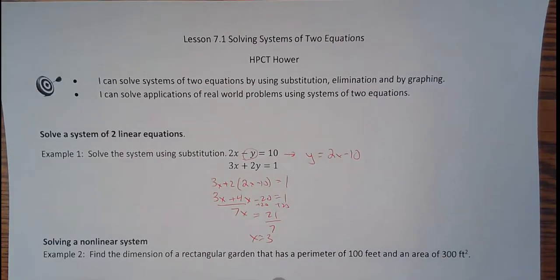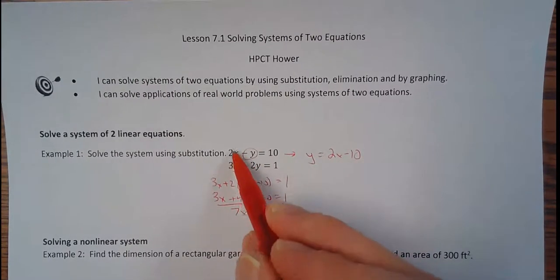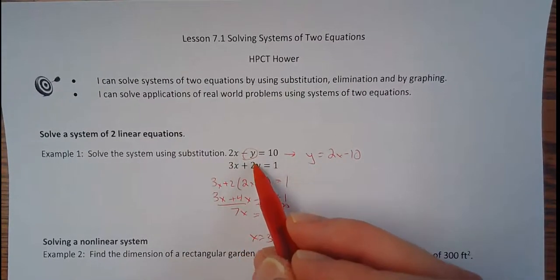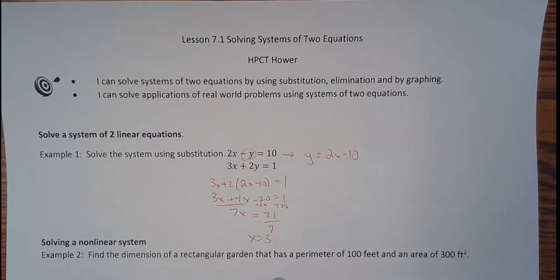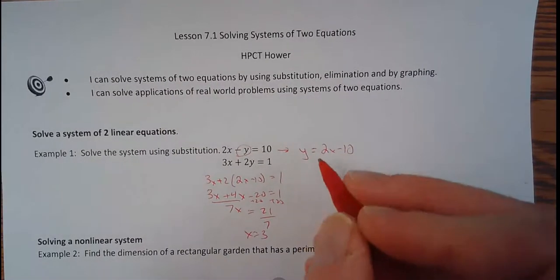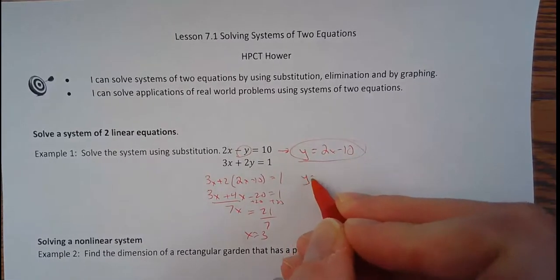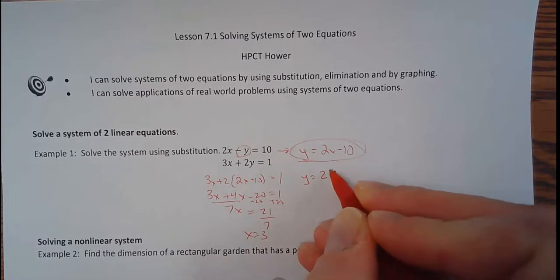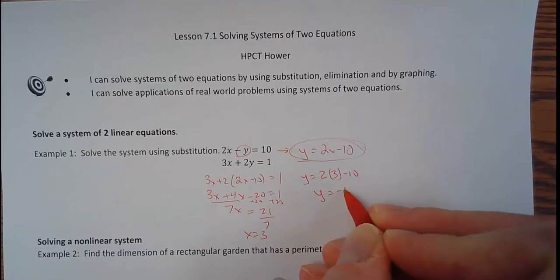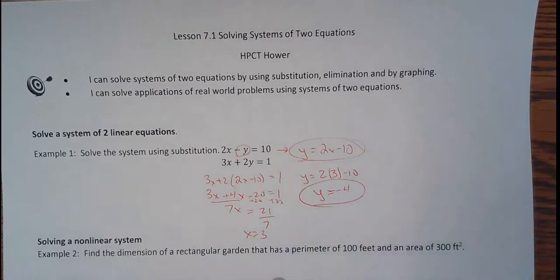So x equals 3. If you remember, you're not done, because you found x. And when we're doing a system of equations, we're trying to find an ordered pair, an x and a y that is a solution to both. So I know that when I plug in 3 to both of these, there is a y that's the same also that I can plug in. There's a y that's paired up with it that will make both equations true. So if I go back, I'm just going to use this guy right here, because y is by itself. So y equals 2, I'm going to substitute 3 in for x. So y would equal negative 4.